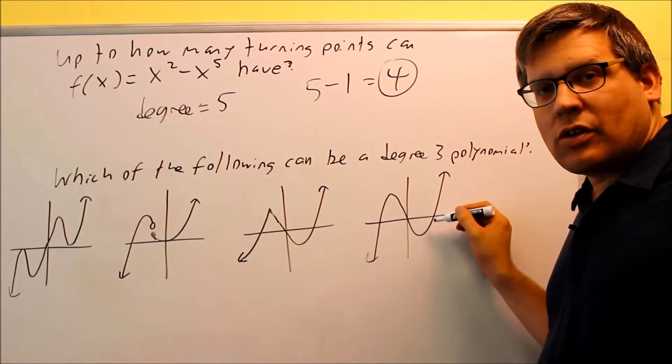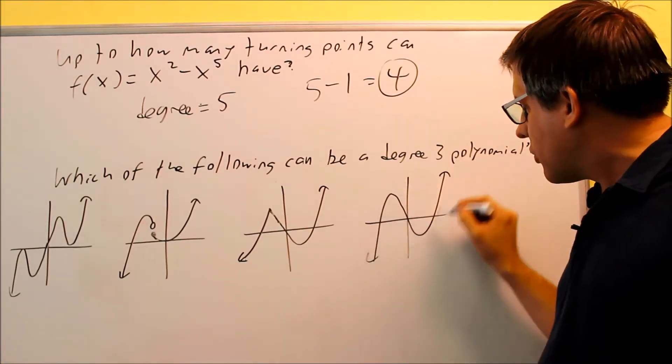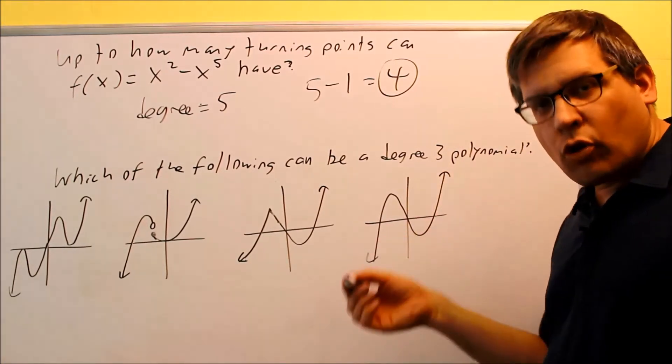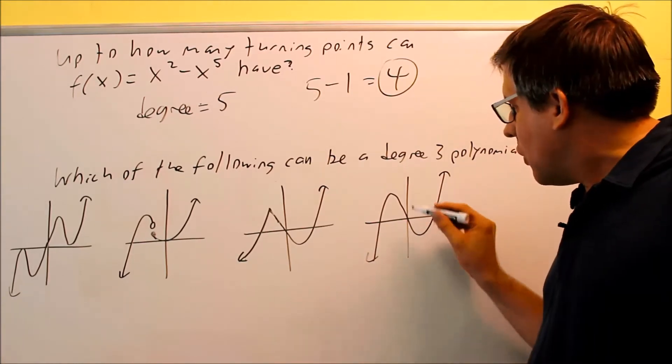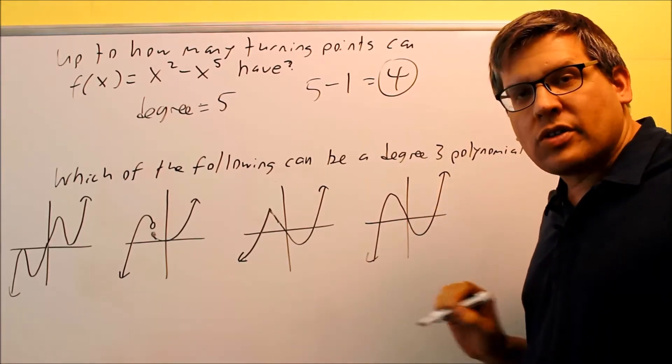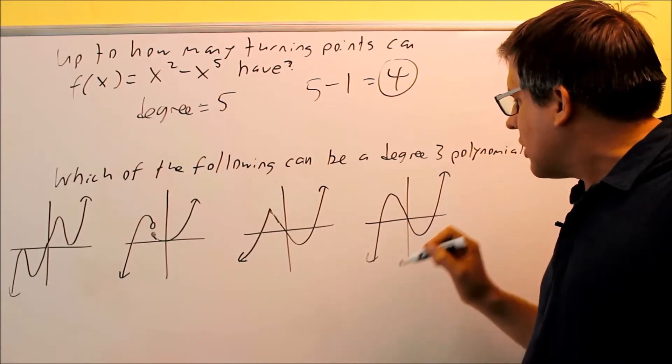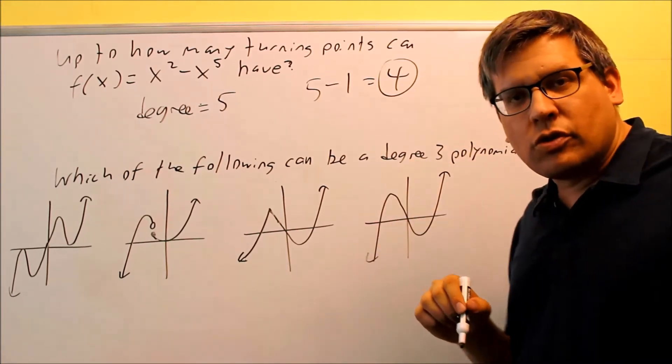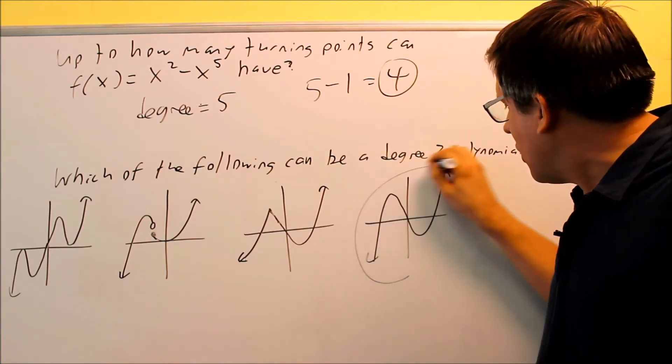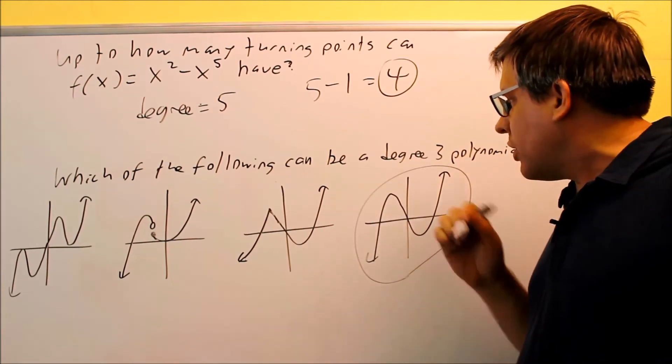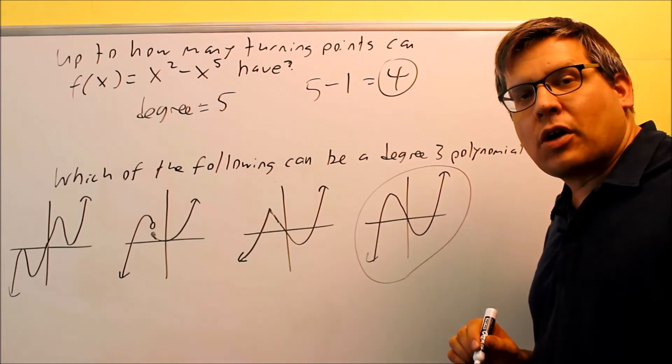So then we have this one. Now this one has smooth curves. There's no breaks. There's no corners in the graph or creases. We have 1, we have 2 turning points. That's going to be fine. Degree 3 means it has to have no more than 2 turning points, 3 minus 1. So this one does fit. So that would be the one that would be a degree 3 polynomial.